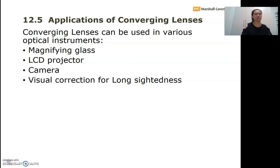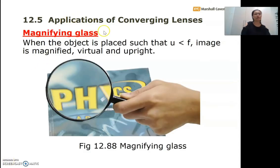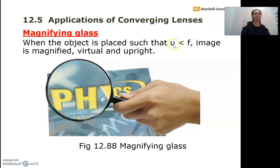The first application of converging lenses is the magnifying glass. This is achieved when the object is placed such that the object distance u is less than the focal length f of the lens. The image is magnified — bigger than the object itself — and you have a virtual, upright image, so you can see very clearly what your object looks like.